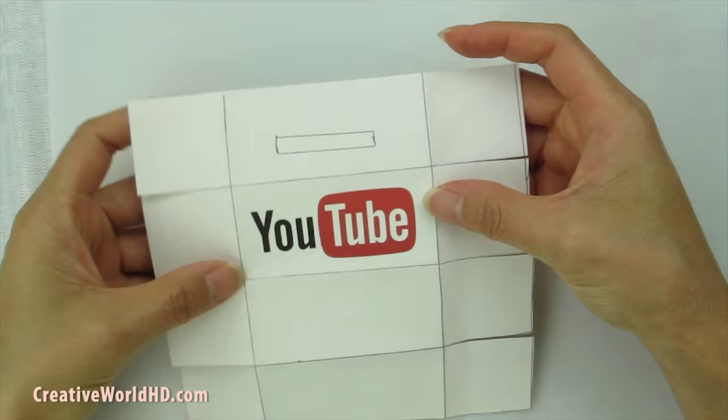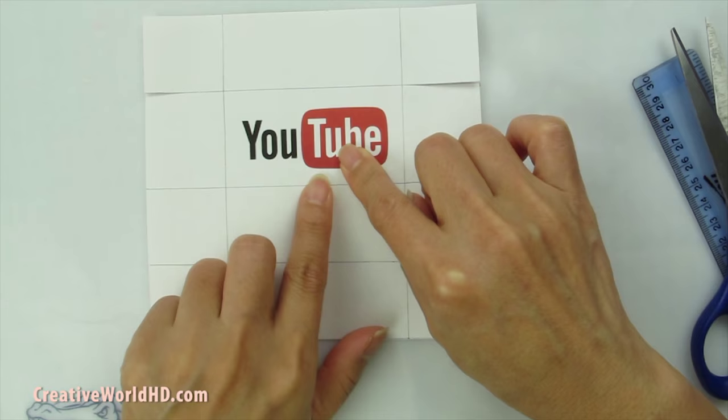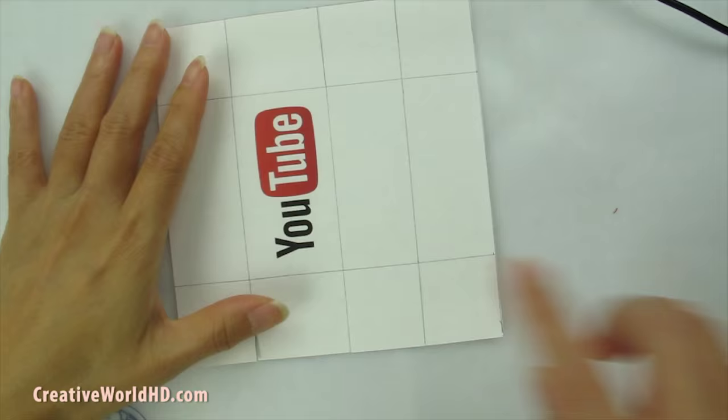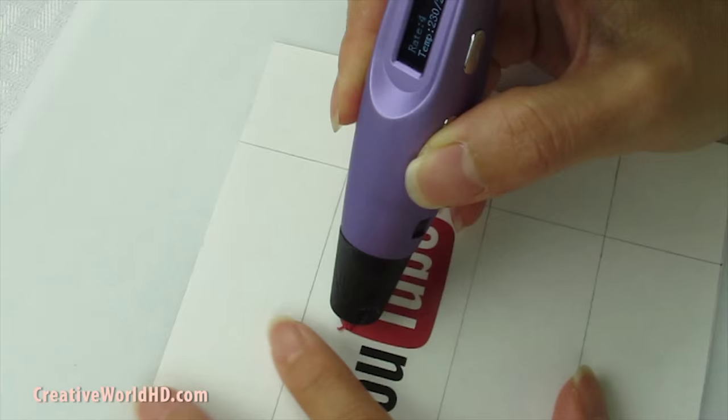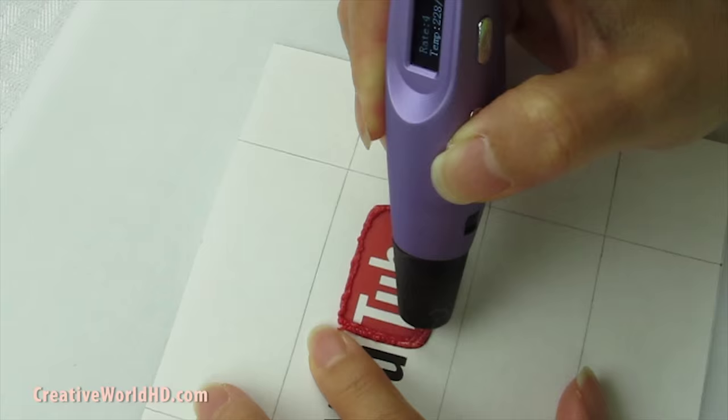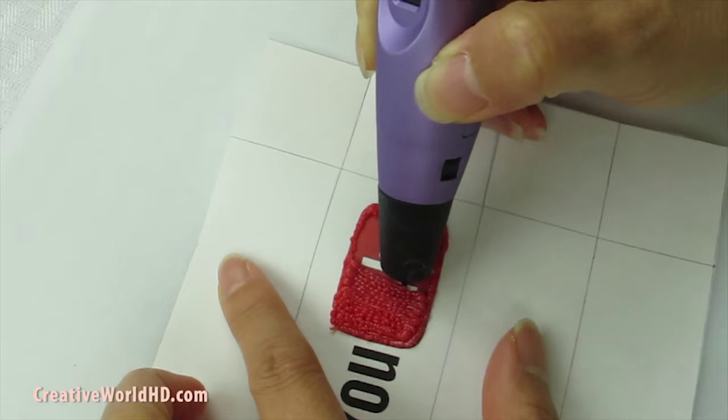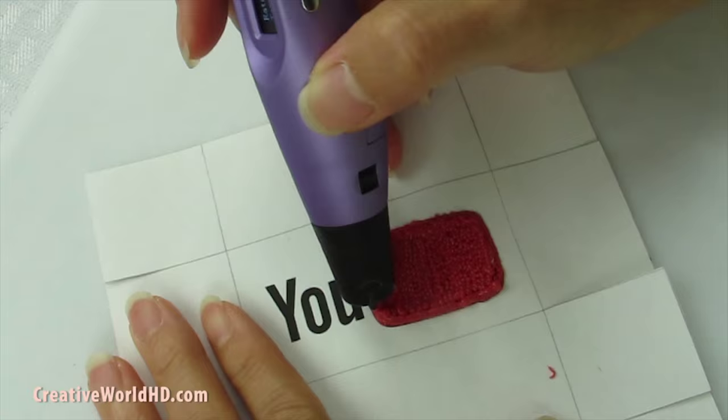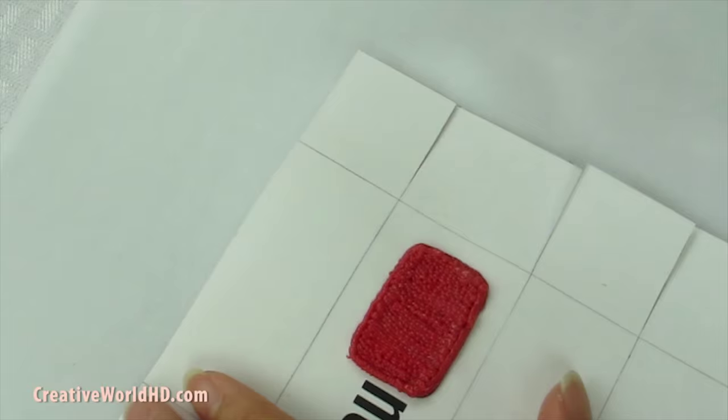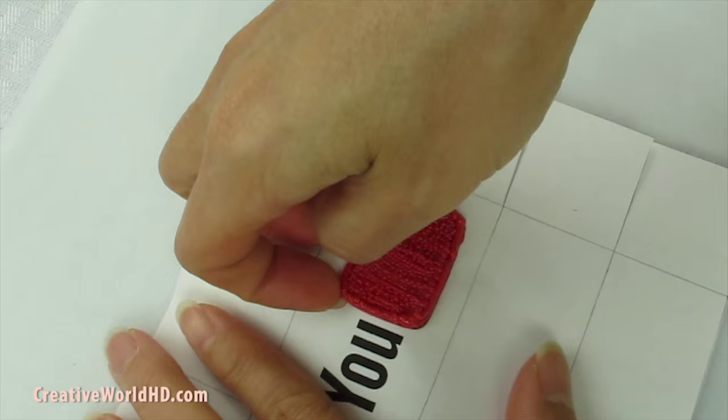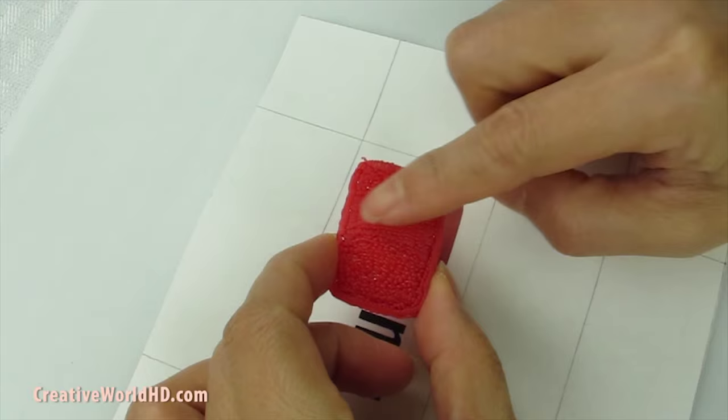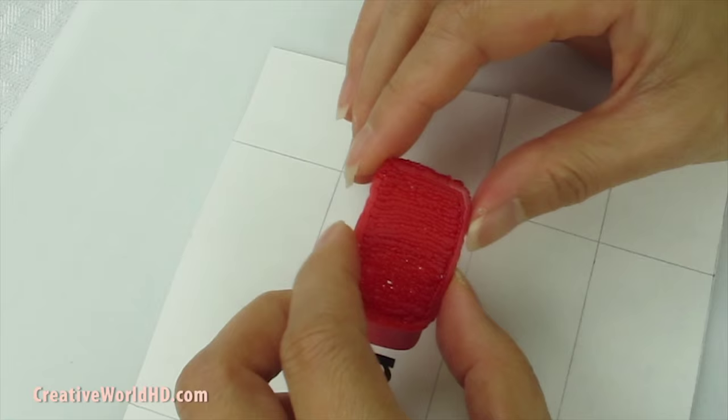Now before we fold it into a box, I'm going to start working on this logo first. We're going to make this red area. Okay, after we're done, I'm going to pull it off. Now I'm going to use this side to write the word here. Because this side is smoother, it's easier to write and it will look better.